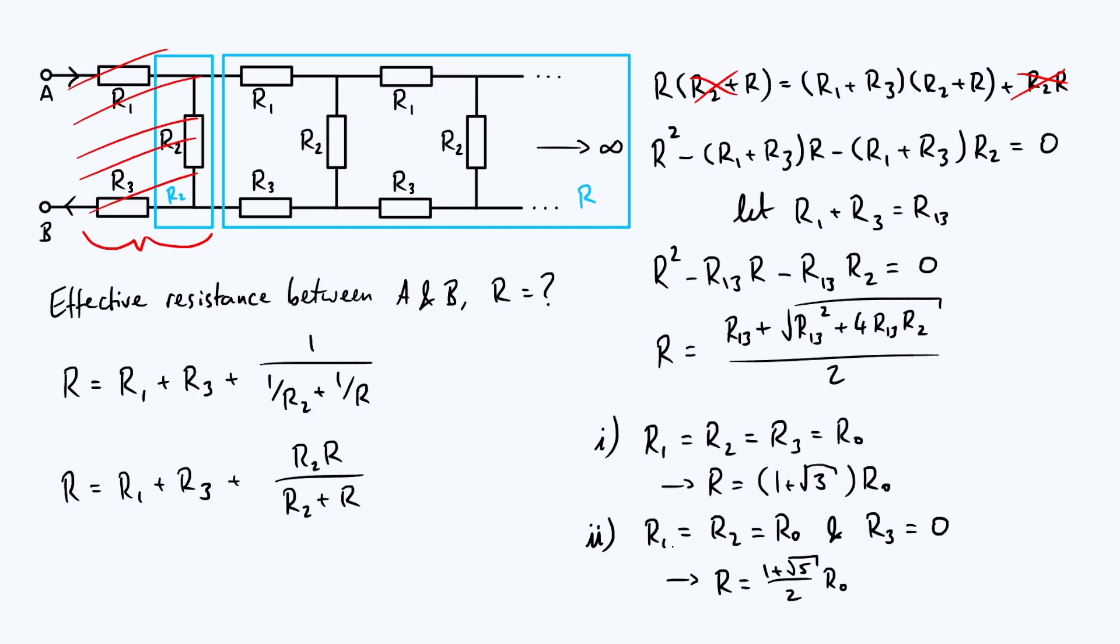But if you go through the maths algebra for that final case you find that the overall resistance is 1 plus root 5 over 2 multiplied by the constant resistance R0 that I've introduced here and that might be interesting because 1 plus root 5 over 2 is the golden ratio which is a number that people sometimes get excited about so there you go. Okay I think that's all I have to say on this just a fun little physics problem to work through thanks for watching and see you next time.